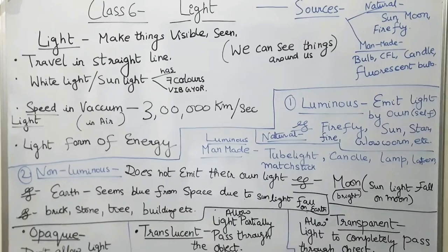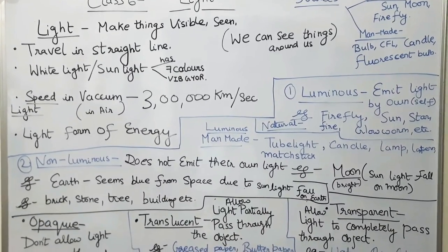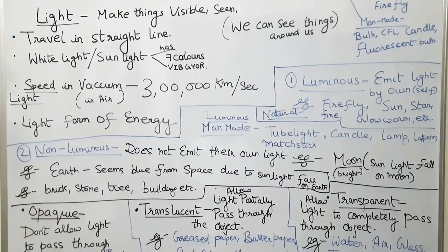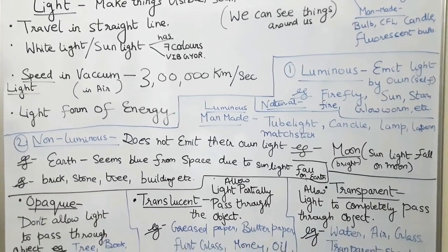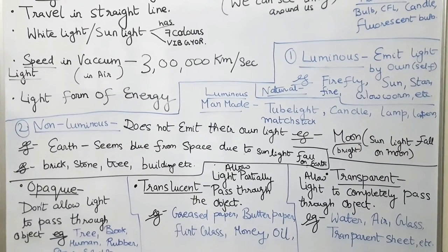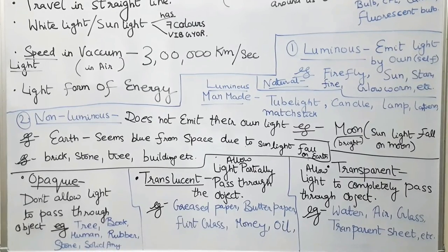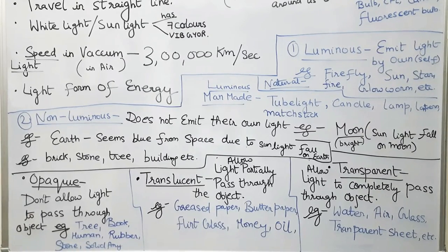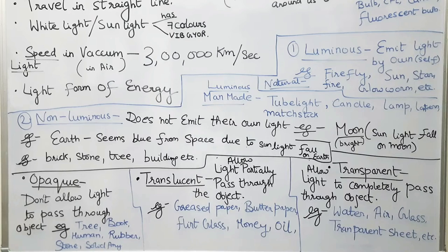There are three types of objects: opaque, translucent, and transparent. Opaque objects do not allow light to pass through them. Examples are trees, books, humans, rubber, animals, or any solid object that prevents light from passing through — like a mobile phone. If you place a light source behind a book or phone, it will not allow light to pass through. That object is known as an opaque object.